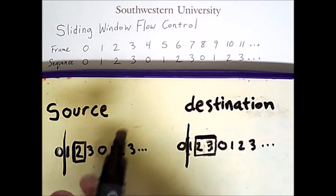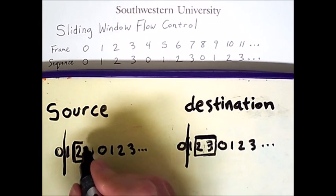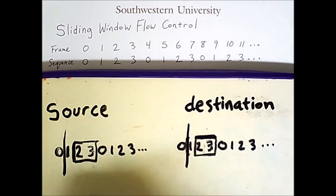Also note that when this vertical bar moves, the source's window should expand as well. As with the destination, the distance between this vertical bar and the far right edge of the window should always be the same.